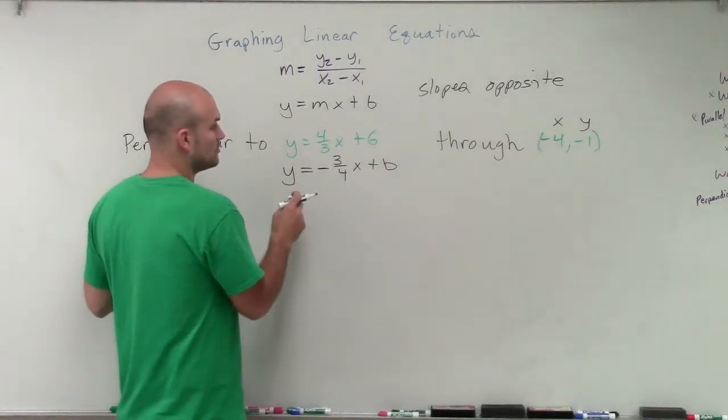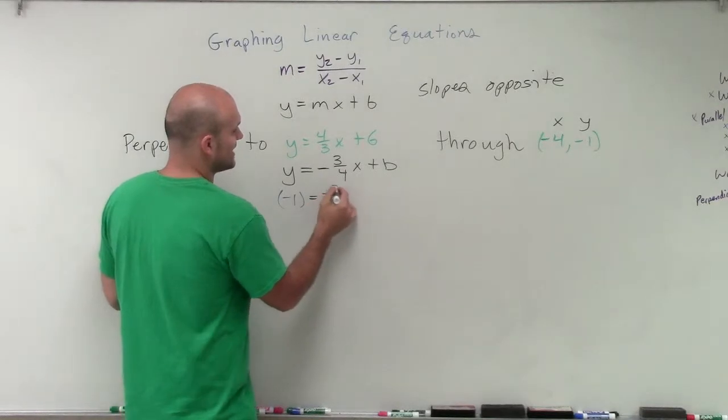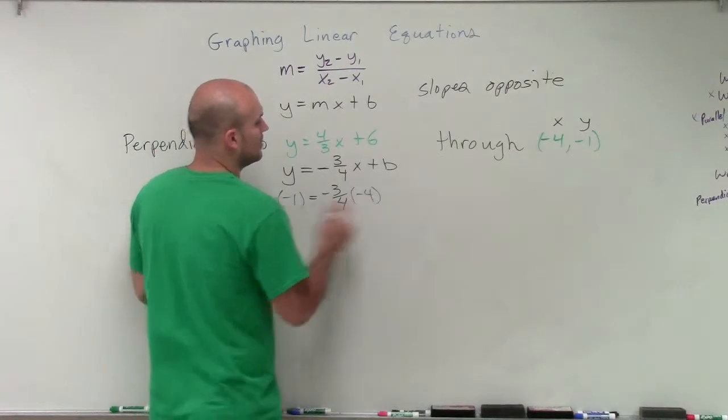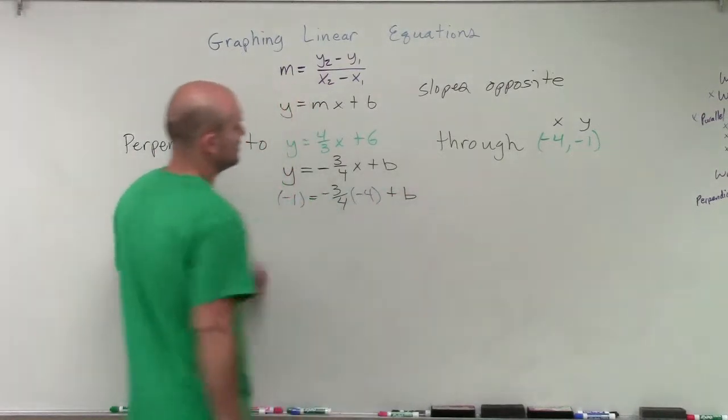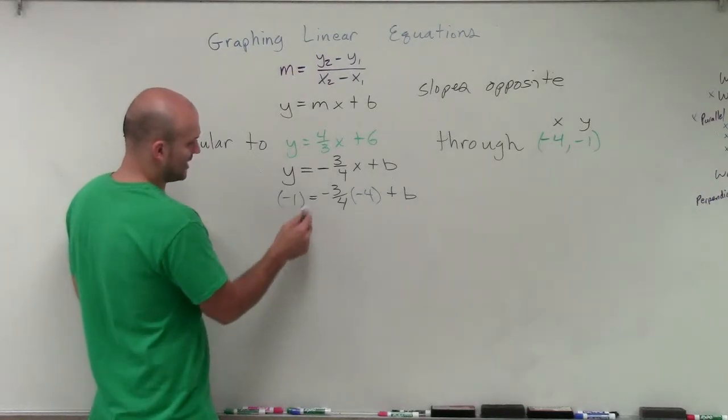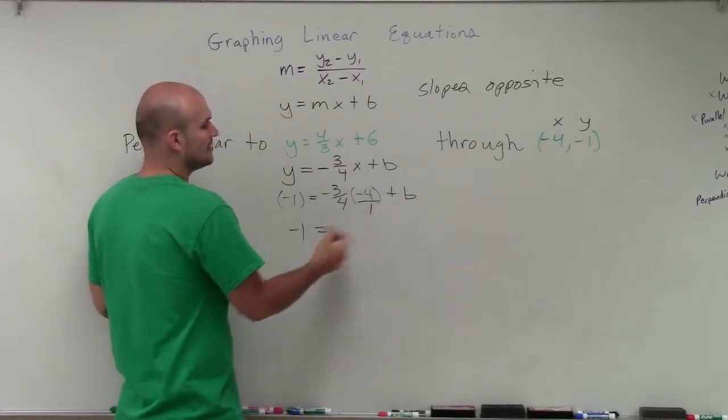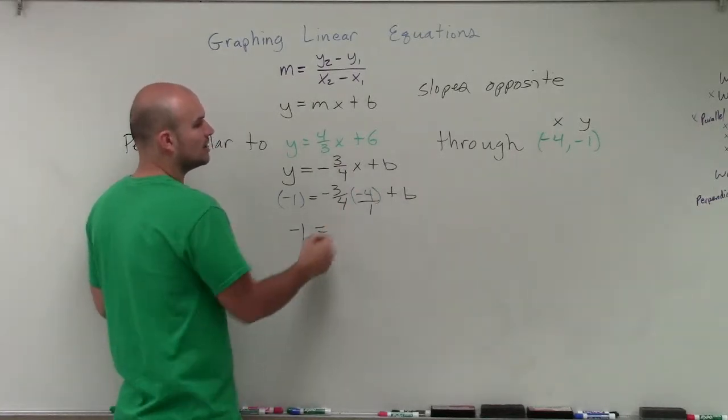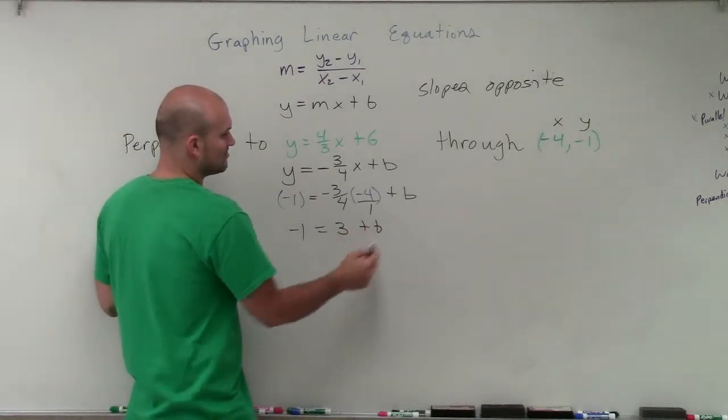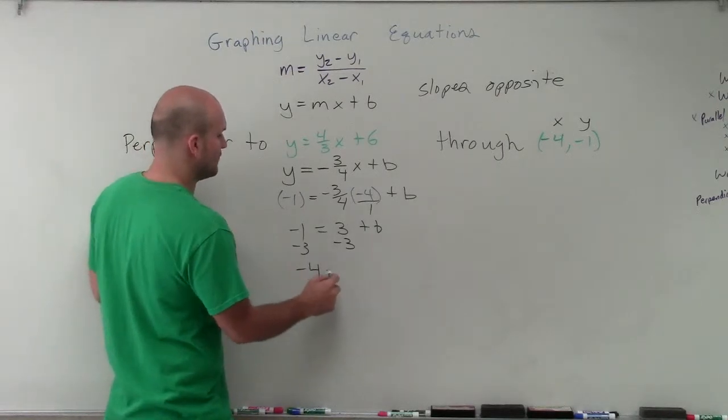So let's go and plug in my y, which will be negative 1, equals a negative 3 fourths times a negative 4 plus b. So now what I'm simply going to do is the negative 1 equals negative 3 fourths times negative 4. That's over 1. So those are going to divide up to 1. Negatives turn to positives. That becomes a positive 3 plus b. Then I solve for b by subtracting, and I get a negative 4 equals b.